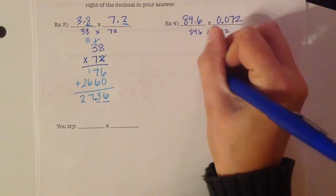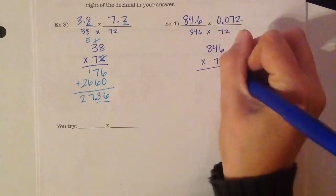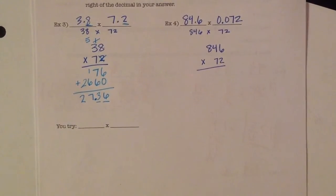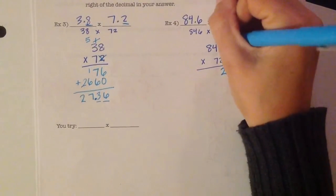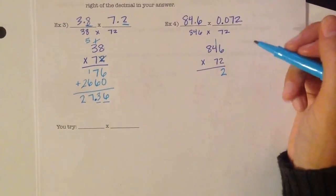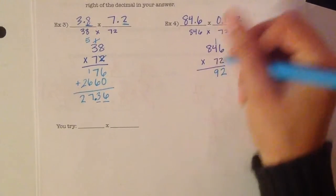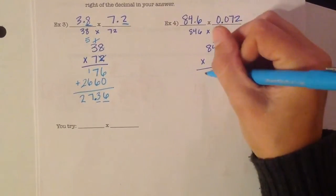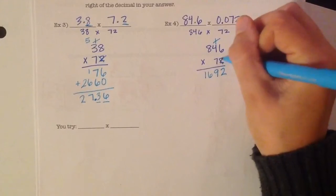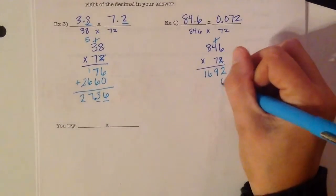Again, the order in which you multiply does not matter. So we're going to multiply. 2 times 6 is 12. So 2 carry the 1. 2 times 4 is 8 plus 1 is 9. 2 times 8 is 16. So we're done with the 2. So put my 0 placeholder.